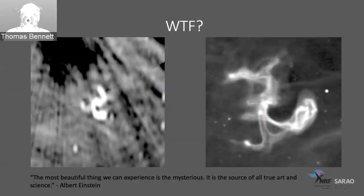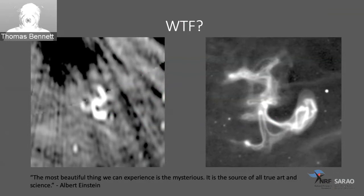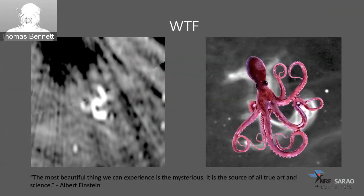We've also got some mysterious stuff we don't know what it is. In the original SAMS catalog you can see it on the left, and then on the right it's resolved with the Meerkat telescope. We still don't know what this is — it's apparently in the local galaxy but there's still debate. I included it here because it looked like an octopus, which seemed pretty cool. That basically covers the science I wanted to talk about.